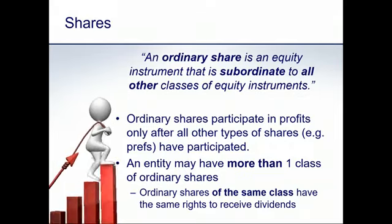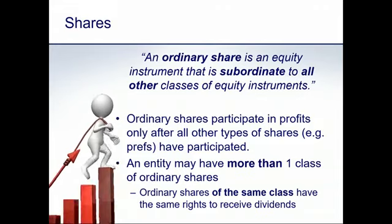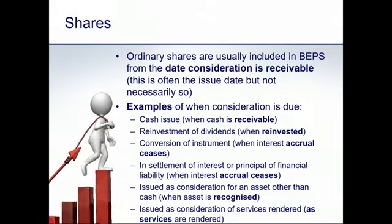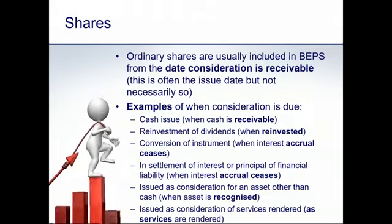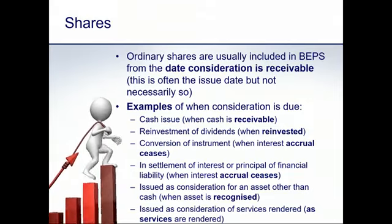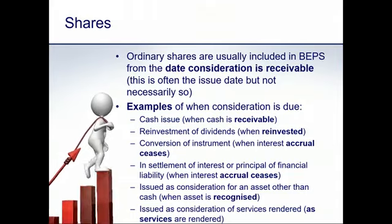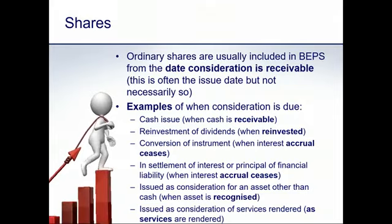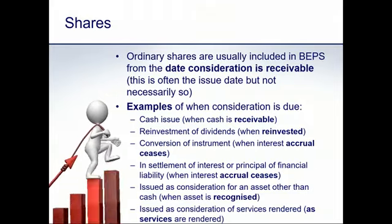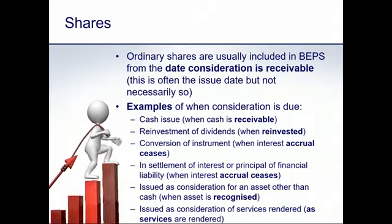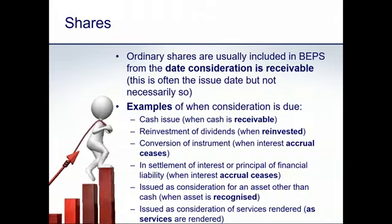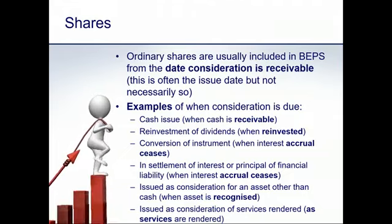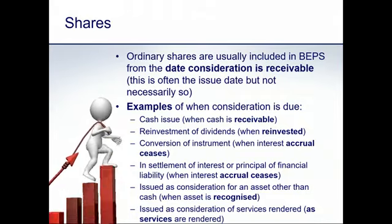Now that we've identified what an ordinary share is, we need to determine how much of the ordinary share to include in the weighting. The weighting attributable to ordinary shares depends on the date on which those ordinary shares are included in our calculation. If shares are only in existence for half the year, they're included with a weighting of 50%. If only in issue for three months out of twelve, they're weighted for 25%.